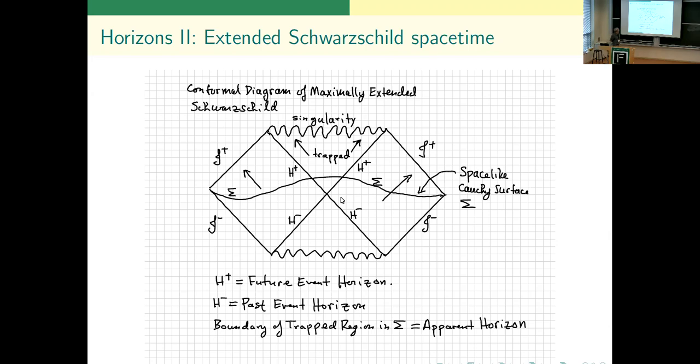Take future null infinity scri plus here, and take everything to its past. You'll get all of this region. It'll have a boundary, and the boundary here is designated H+, the so-called event horizon or future event horizon of the black hole. The trapped region is called the black hole. Something else happens in the trapped region: imagine a spherical light bulb emitting light - even though it looks like the light's traveling outward, it's actually traveling inward. So that gives a notion of what it means to be trapped.